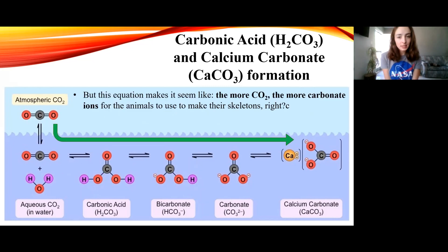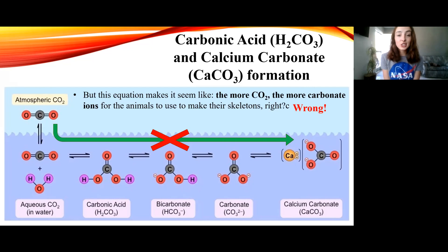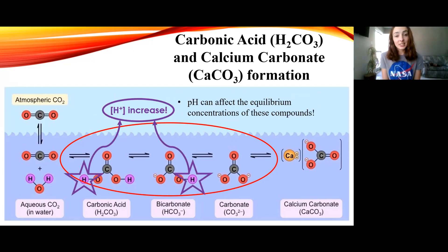You might have heard that organisms that make their skeletons and hard parts out of calcium carbonate are dissolving because of ocean acidification. And you've probably also noticed that this equation seems like it should be causing more calcium carbonate precipitation rather than less. But we have to think about this as an equilibrium equation, not a unidirectional one. These bidirectional arrows mean reversible reactions, and that's important because carbonic acid and calcium carbonate formation like to be in equilibrium with each other. Right now, the thing going out of balance is the hydrogen ion concentration — the pH — which greatly affects the equilibrium concentrations of compounds in these reversible reactions.